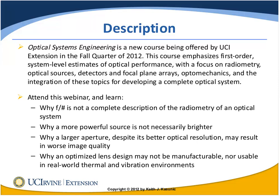The third question looks at detectors and focal plane arrays: why might a larger aperture, despite better optical resolution, result in worse image quality? We're used to thinking a larger aperture gives a smaller blur size and better optical resolution — and that's certainly the case optically — but it may result in worse system resolution when you include the focal plane array. Finally, we look at optomechanics: a ZEMAX-optimized lens design may not be manufacturable, nor usable in a real-world thermal and vibration environment, since ZEMAX doesn't account for those issues. It's up to us as optical system engineers to bring those topics to the table.